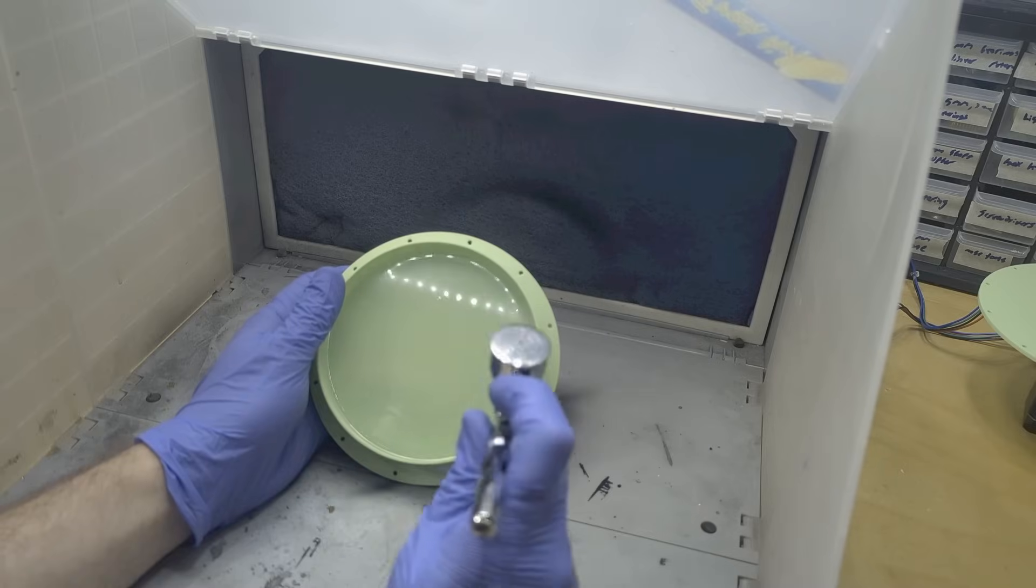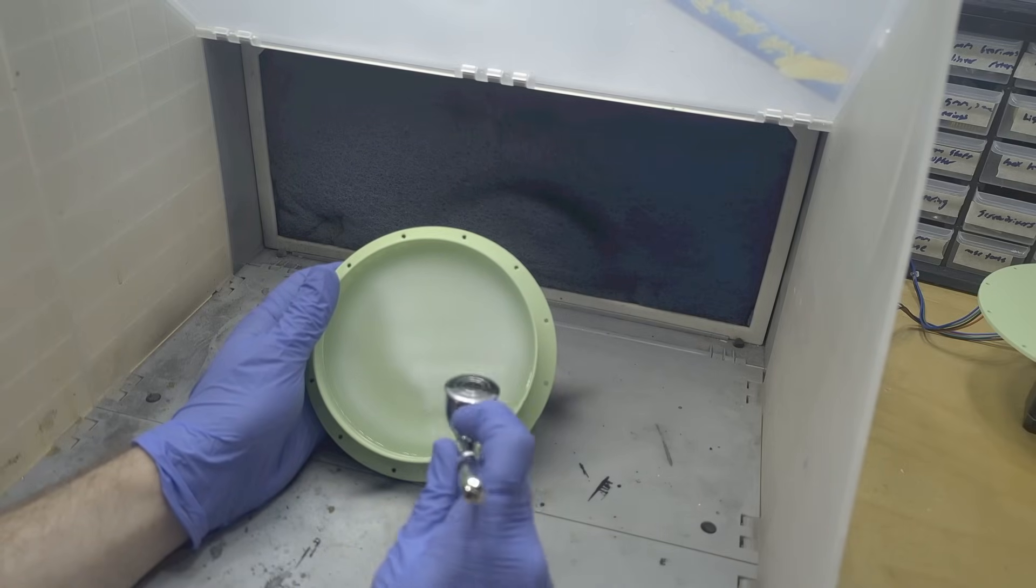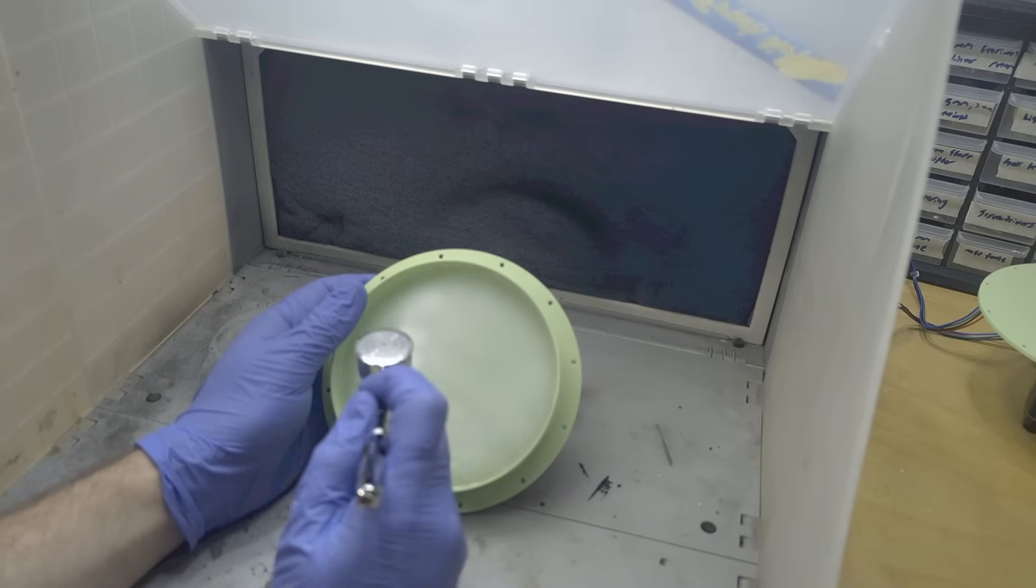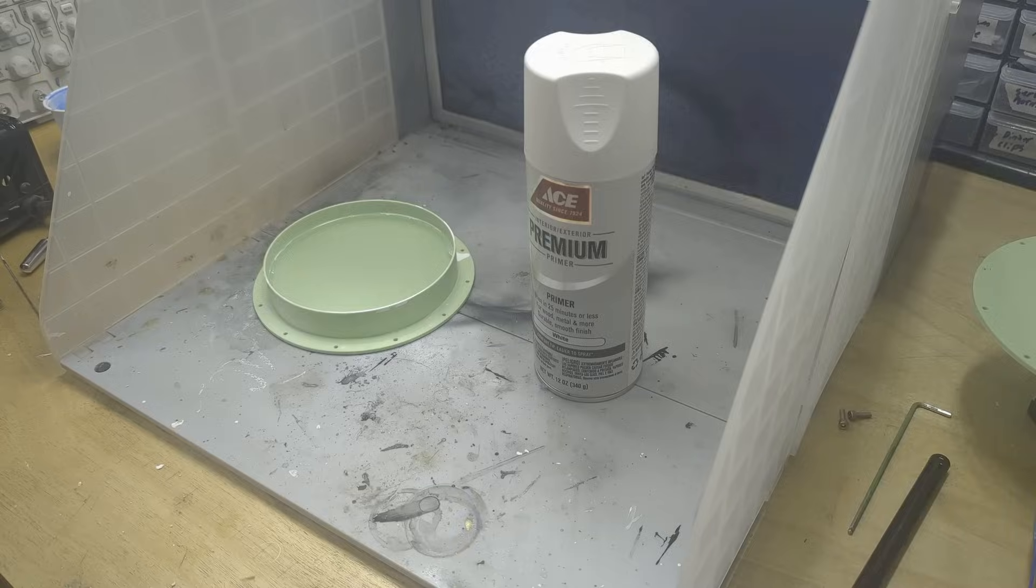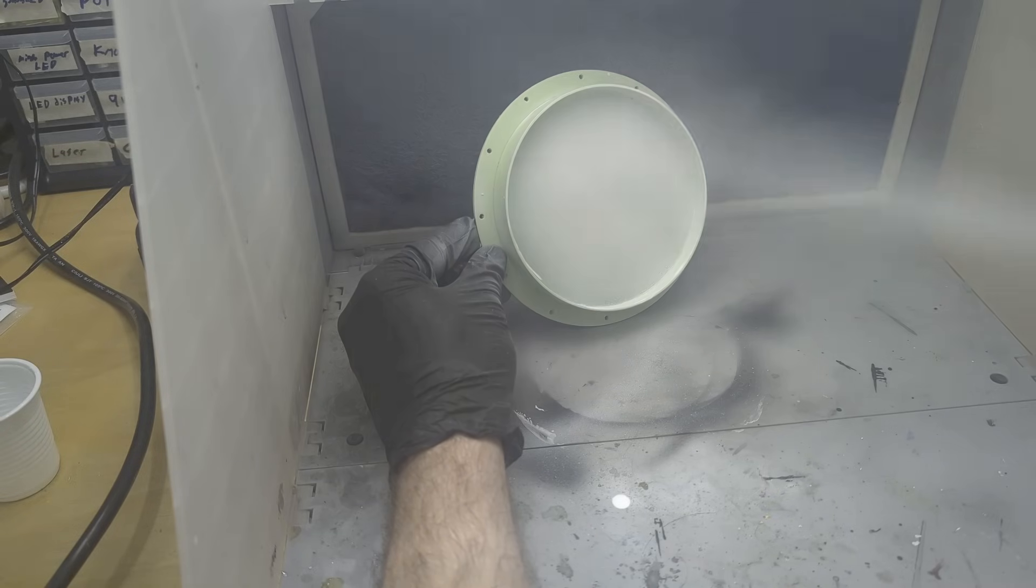Initially, I tried to use an airbrush to apply the primer, but I wasn't able to get as smooth of a coat as I wanted. So I went out and I got a can of spray primer. And with a few sprays, the surface was primed.